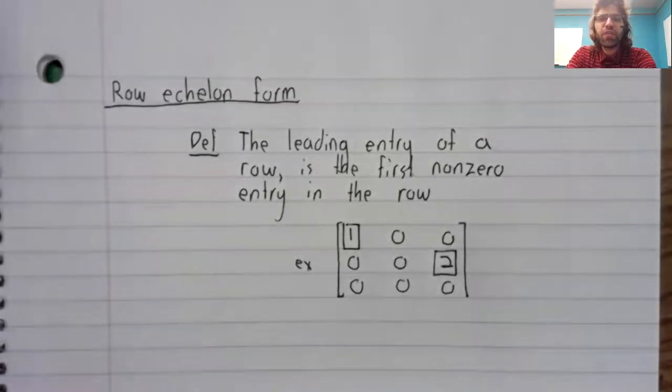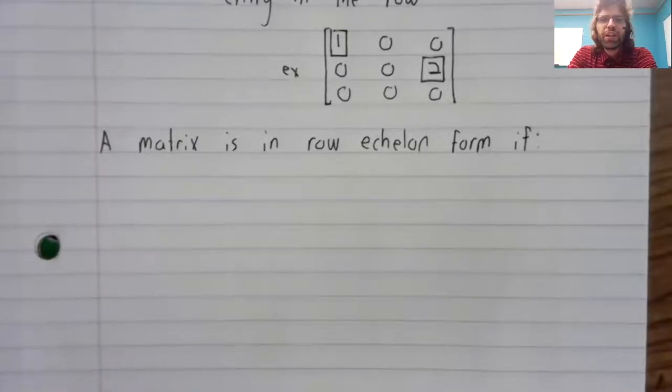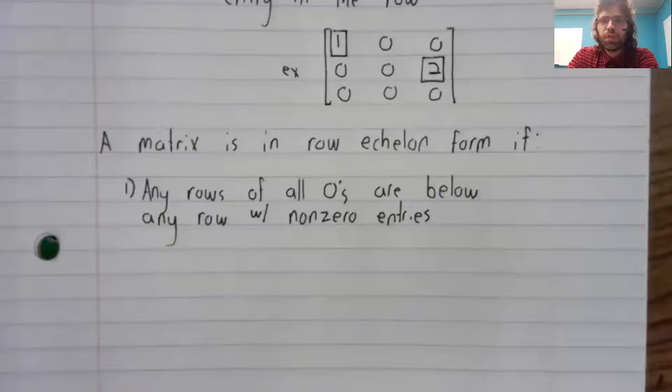With this definition, we can state our more significant definition. A matrix is in row echelon form if two conditions are satisfied. First,